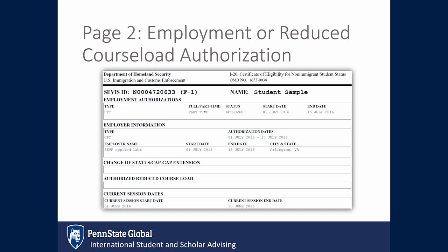Page 2 will contain employment authorization or reduce course load authorization. This area will be blank on your Form I-20 until authorization is granted.